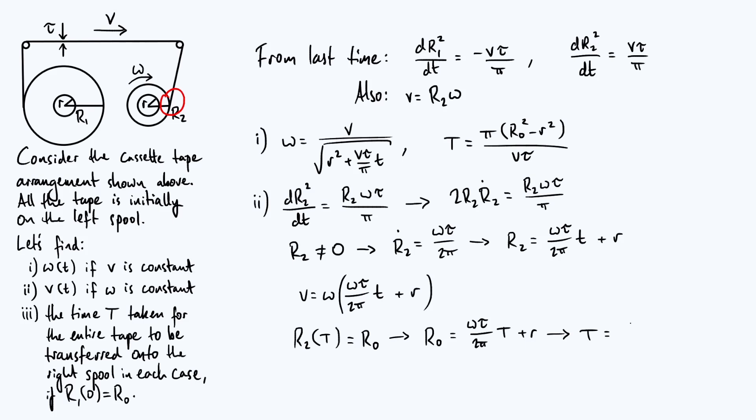Rearrange this to get capital T as the subject, you get 2 pi times R0 minus r divided by omega tau. Now again, there's quite a nice straightforward way to understand this equation. Notice that you've got the quantity 2 pi over omega. So 2 pi over omega is, of course, the rotation period, which is a constant because omega itself is a constant. So that 2 pi over omega is the period. Then that period has been multiplied by R0 minus r over tau. Now, if you think about it, R0 minus r is the thickness of the annulus of tape that will be on the right-hand spool at the end of the playing of the tape.